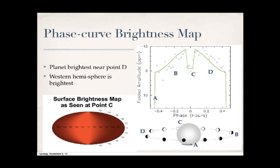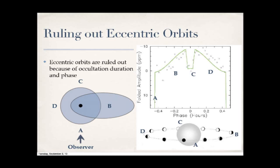To explain this asymmetry: you might suggest a little eccentricity, but I can immediately rule that out. The occultation appears exactly at phase 0.5 offset from the transit with the same duration, meaning the orbit is very close to zero eccentricity — less than about 0.1%. At that range of eccentricity, there's no way to produce the observed asymmetry in the phase curve.